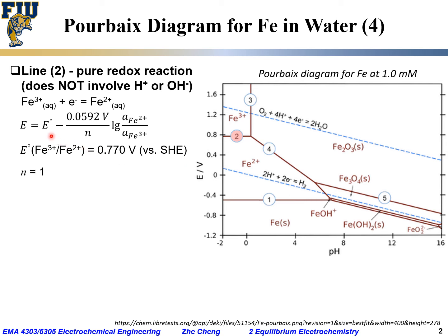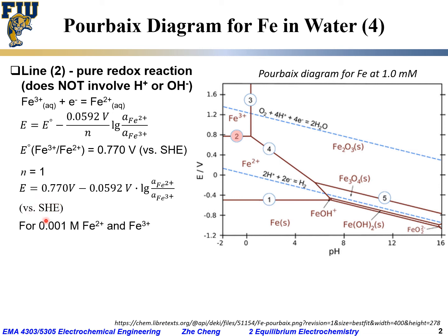The standard electrode potential E₀ is 0.770 V versus SHE. Since this half-cell reaction only involves one electron, n equals 1. As a result, the electrode potential is: 0.770 volt minus 0.0592 divided by 1, times the log of the activity of Fe²⁺ divided by the activity of Fe³⁺, versus SHE.